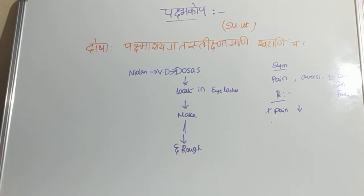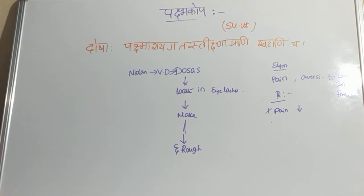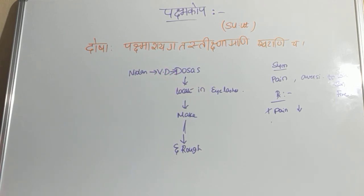Now we will see the samprapti in chart form. If you represent the samprapti in a chart form, it will be easy for the examiner to evaluate your paper, it consumes less time, and you get more marks. Due to nidana sevana, the doshas will get vitiated — factors like ushna abhitaptasya jala sevana and similar vitiatory factors apply for netraroga.